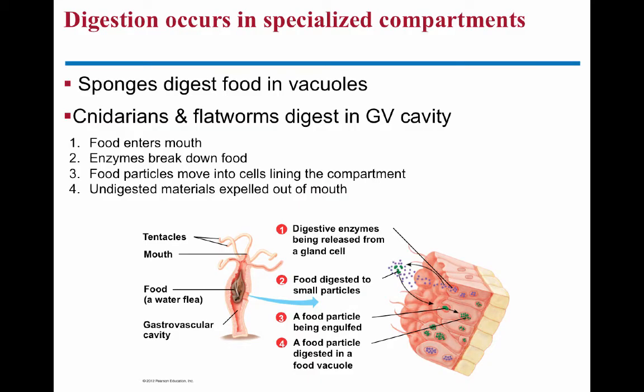Here are some examples of digestion compartments. Sponges specifically digest in vacuoles inside their cells — they filter and capture the food, take it into their cell, and that's the only place digestion happens.